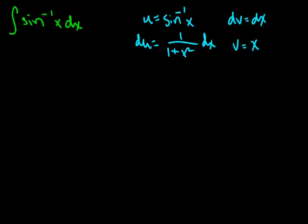So putting it back together now, we get the integral of sine inverse of x dx is equal to uv, which is x sine inverse of x, then minus the integral of vdu, which is x over 1 plus x squared dx.